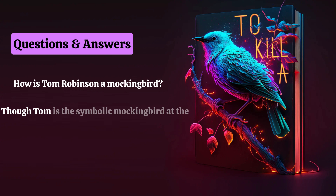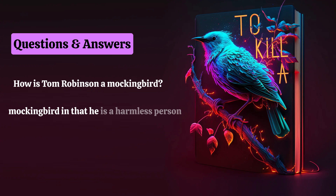Though Tom is the symbolic mockingbird at the heart of the novel, he is not the only character who fits that description. Atticus also specifically describes Boo Radley as a mockingbird in that he is a harmless person who is the victim of pointless cruelty. Unlike Tom Robinson, Boo Radley is not destroyed, though he does suffer greatly.